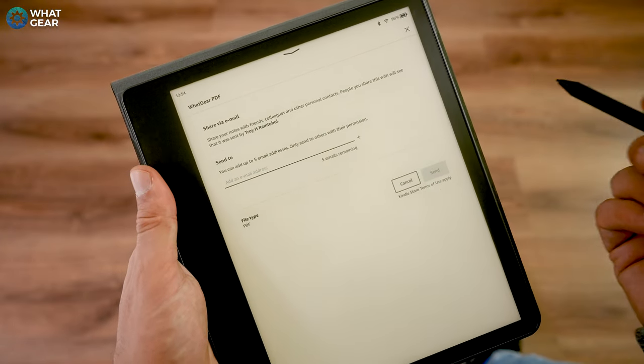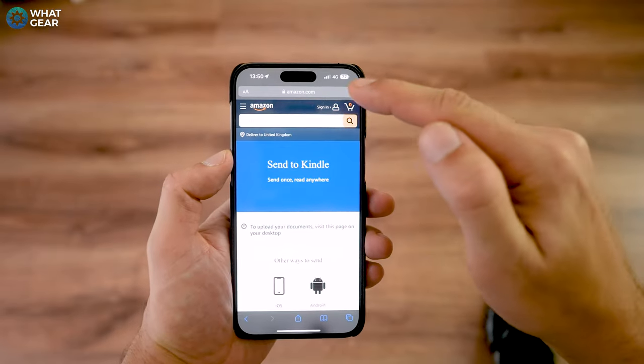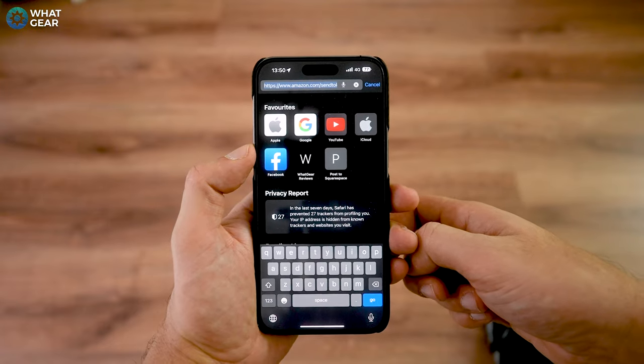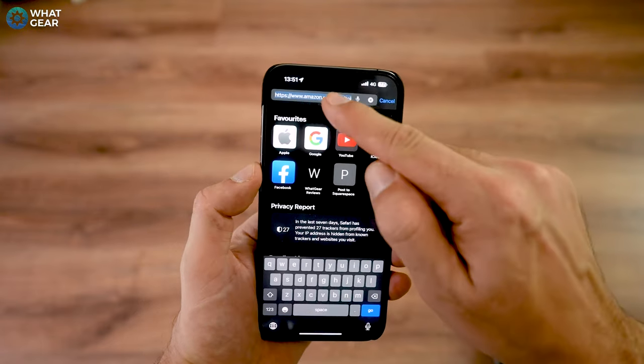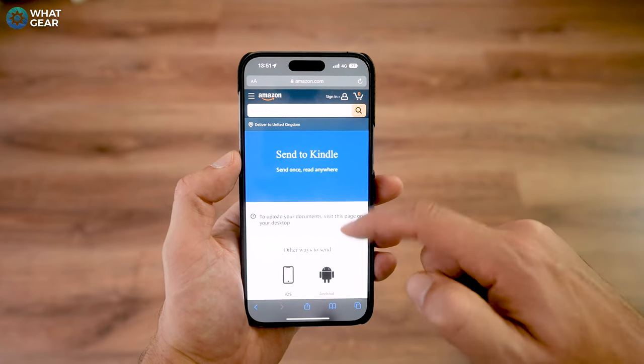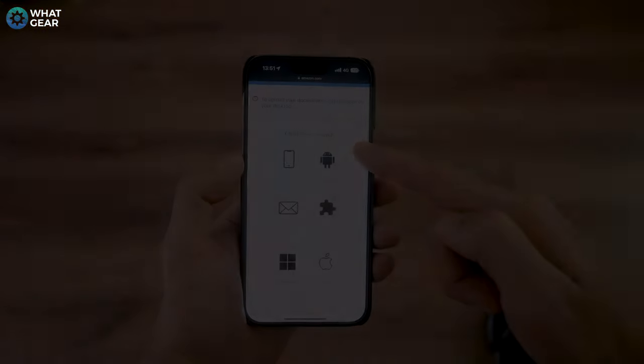And another way to get the documents onto the Kindle scribe is to send them directly through the Amazon Kindle app on your smartphone. And to do this all you need to do is find the file on your phone and hit the share button then select share to Kindle. This will add it to the library and then once again you can open it on the scribe, sign it and send it. A very useful tool if you ask me.